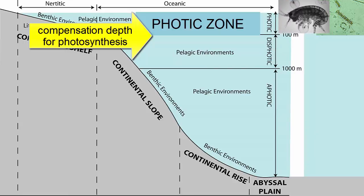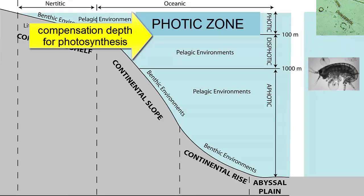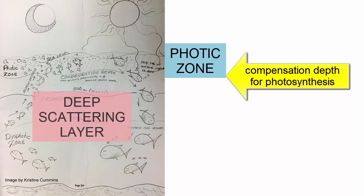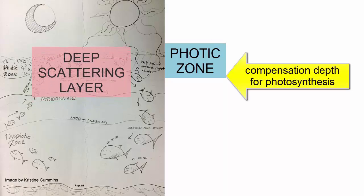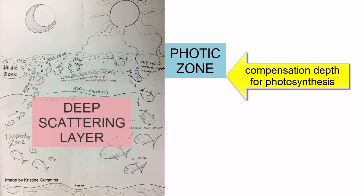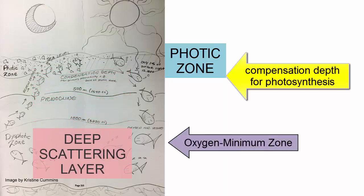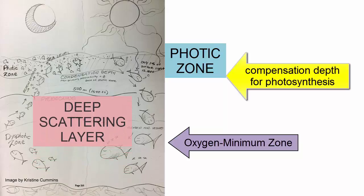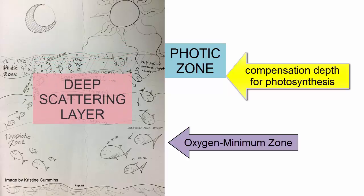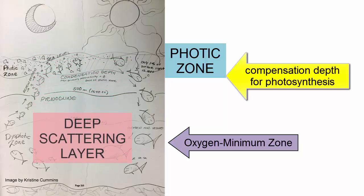Large numbers of heterotrophs will rise above the compensation depth at night to feed on photosynthesizers and on each other in the protection of darkness. During the day they descend back below the photic zone, just under the pycnocline, hiding and waiting for the next night's feast. We call this large daily migration the deep scattering layer — it is such a large mass of organisms that it can be detected by sonar. One major consequence is that the lowest oxygen levels in the world's oceans occur where these organisms hide during the day, because as they respire they use up oxygen, there is no photosynthesis to replenish it, and mixing is slow beneath the pycnocline.